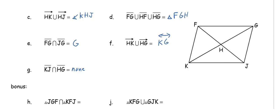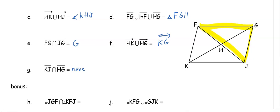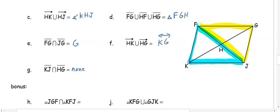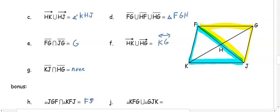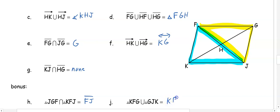In the bonus section: triangle JGF and triangle KFJ — what is their intersection? The intersection is the segment they share in the middle, which is segment FJ. Then using the same triangles for a union: they form a four-sided figure, so we name it KFGJ using the four letters.